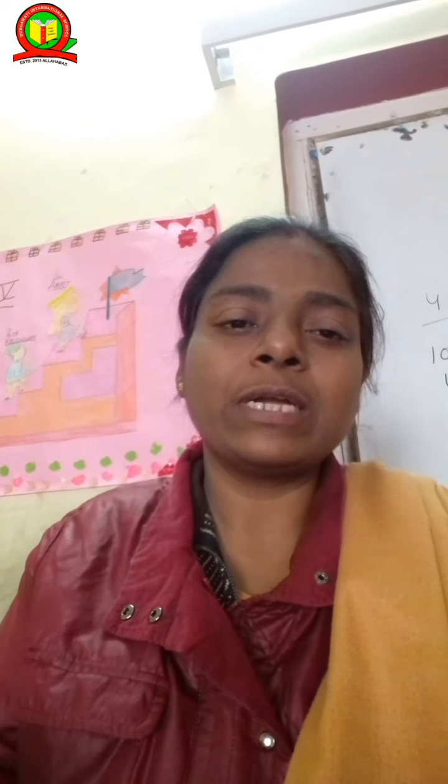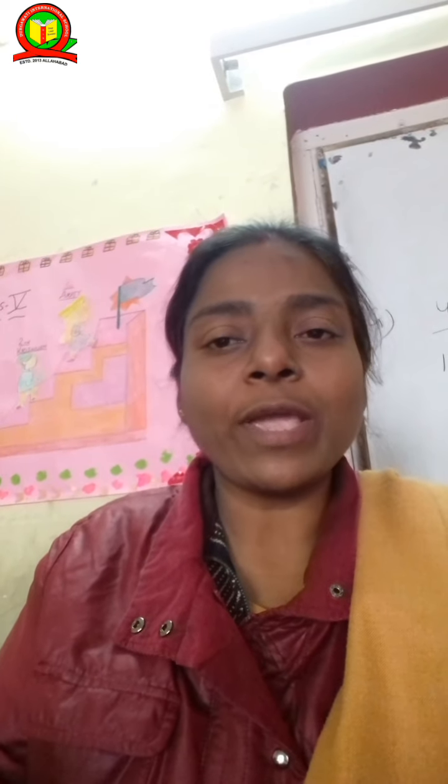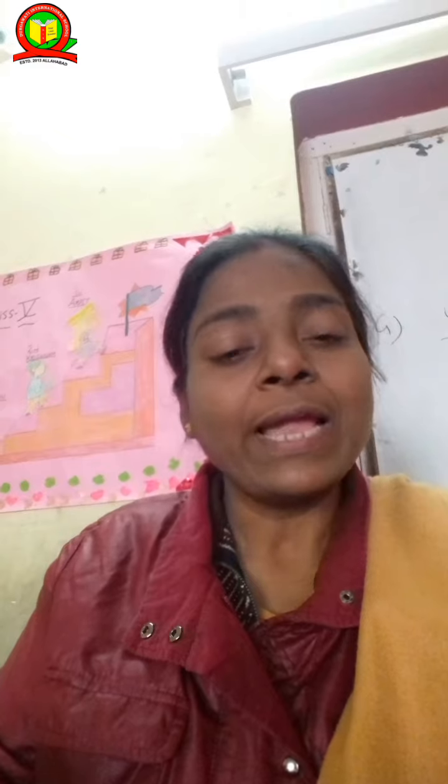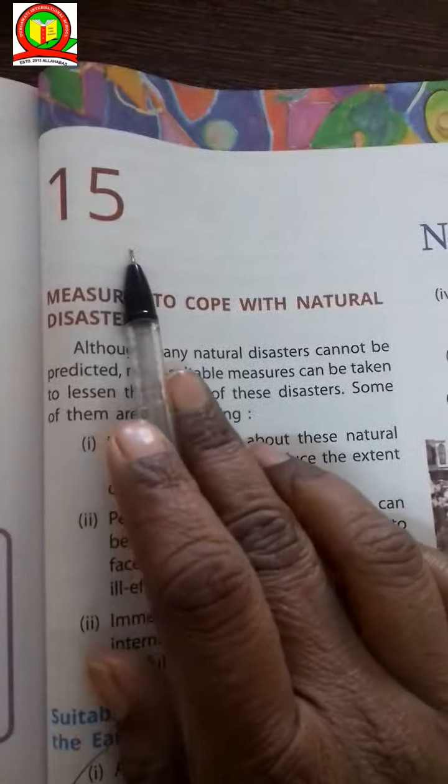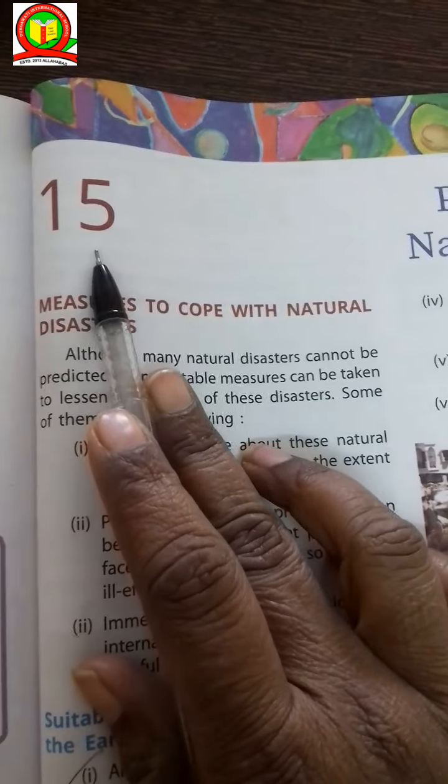Hello, myself Shri Praburuga. I am talking about lesson 15. It's a social studies subject for class 5. Now I am explaining this lesson — lesson 15, which is about precautions for natural disasters.